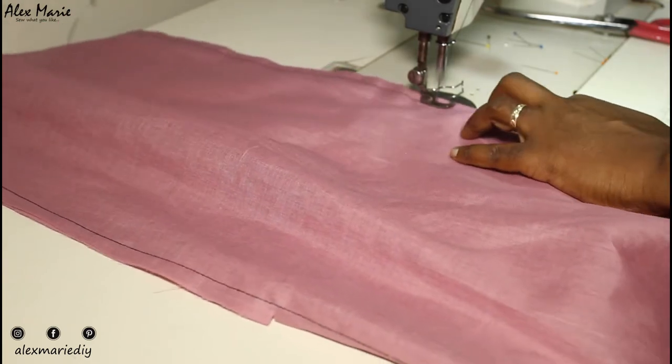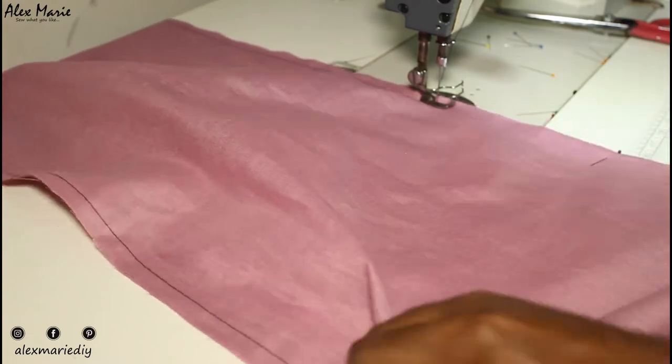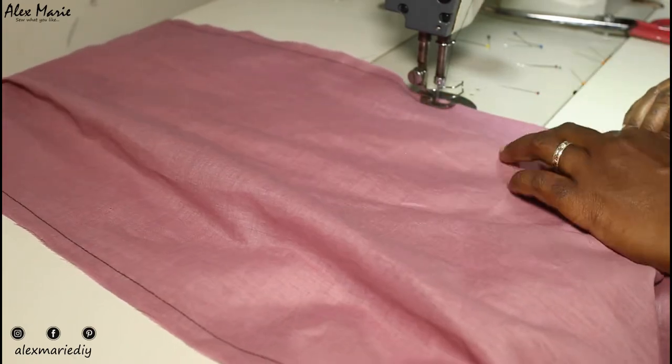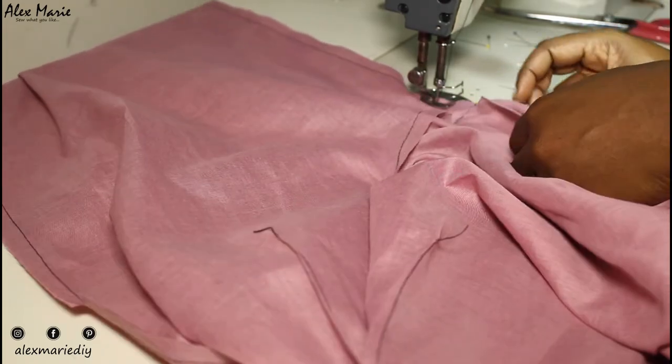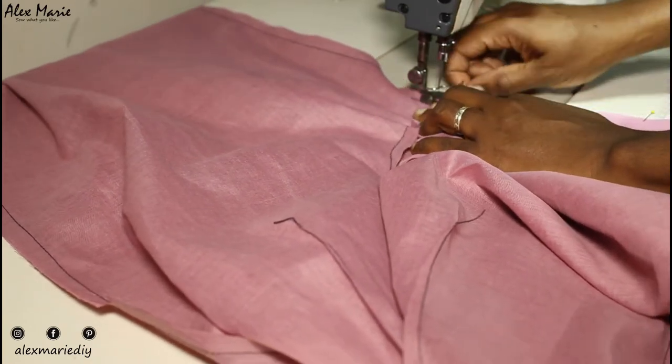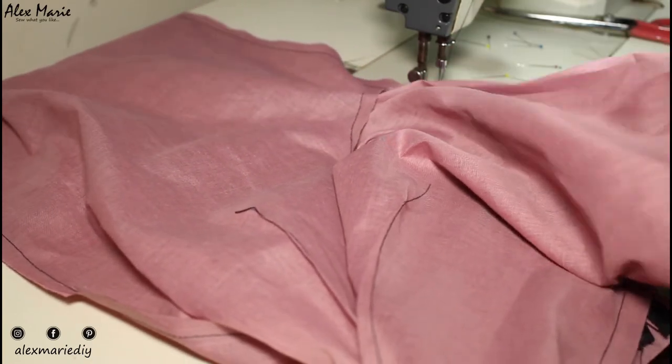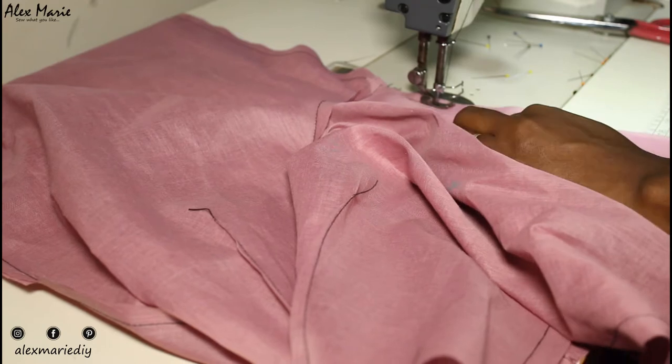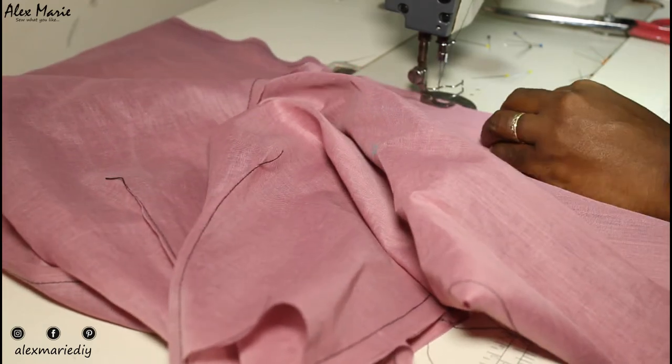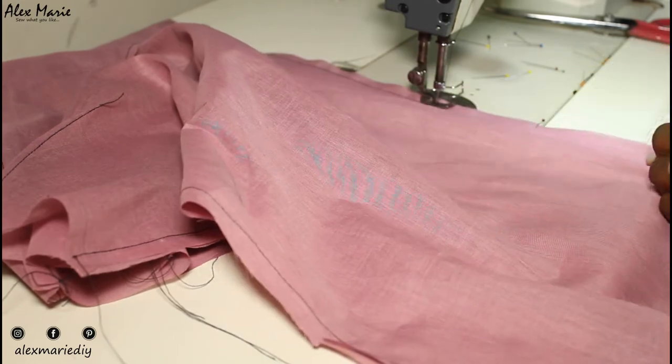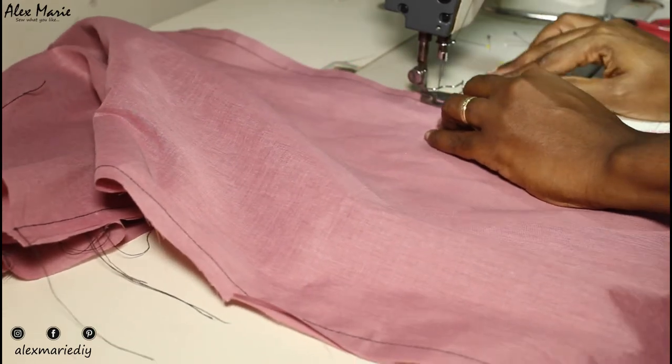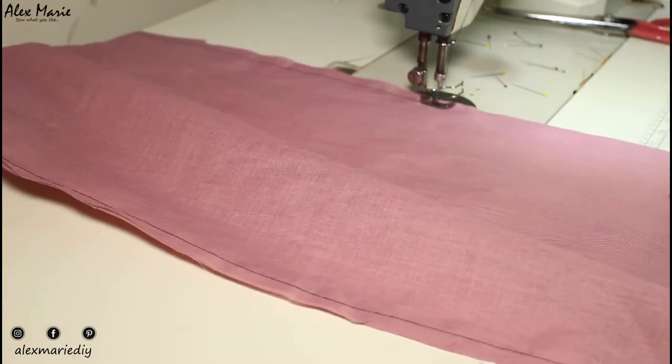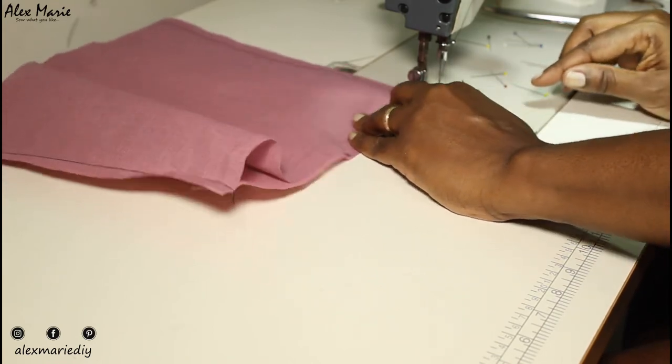So once I get past the knee, I'm going to pull on the fabric slightly just to make sure the back gets eased in. I'm holding it firm and then you sew all the way to the crotch, to the center, and then you sew down straight down to the other leg and to the hem.